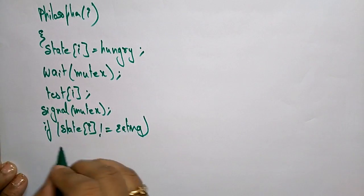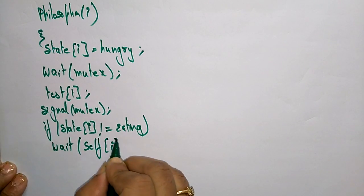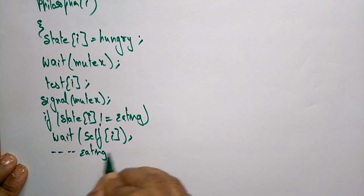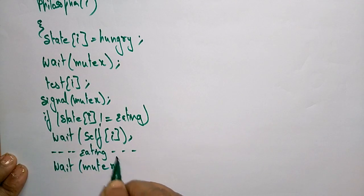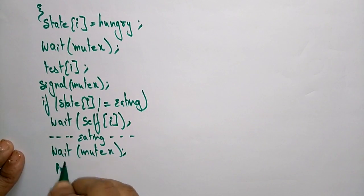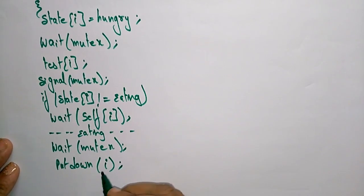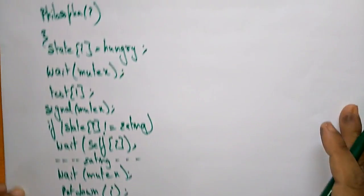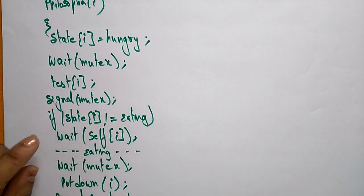If philosopher zero is not eating, then he has to call wait(self[i]) — initially it is zero — and then perform eating, and call wait(mutex) after that. Then I have to put down the fork by calling the function put_down(i) and then call signal(mutex). This completes the main function for philosopher i.